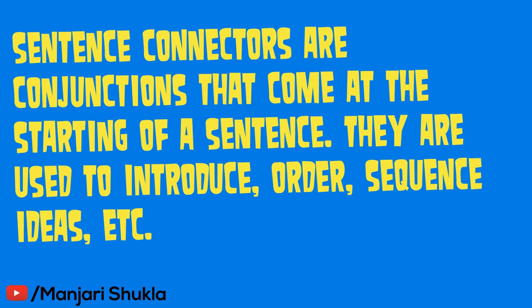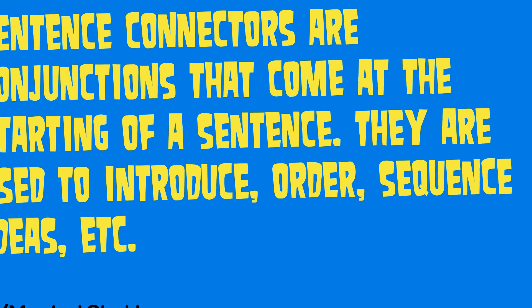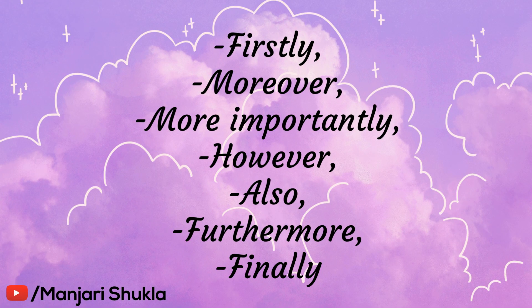Sentence connectors are conjunctions that come at the start of a sentence. They are used to introduce, order, or sequence ideas. Examples of sentence connectors are: 'firstly', 'more importantly', 'however', 'also', and many more. An important rule when using sentence connectors is that after you write the conjunction at the start of a sentence, a comma is required.